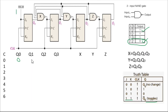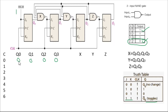Initially the counter is cleared, so q0, q1, q2, q3 are all zero. Since J0 and K0 are always one, q0 will toggle each time: zero, one, zero, one. The condition of q1 is decided by NAND gate X — its output depends on the values of q0, q1, q2, and q3.